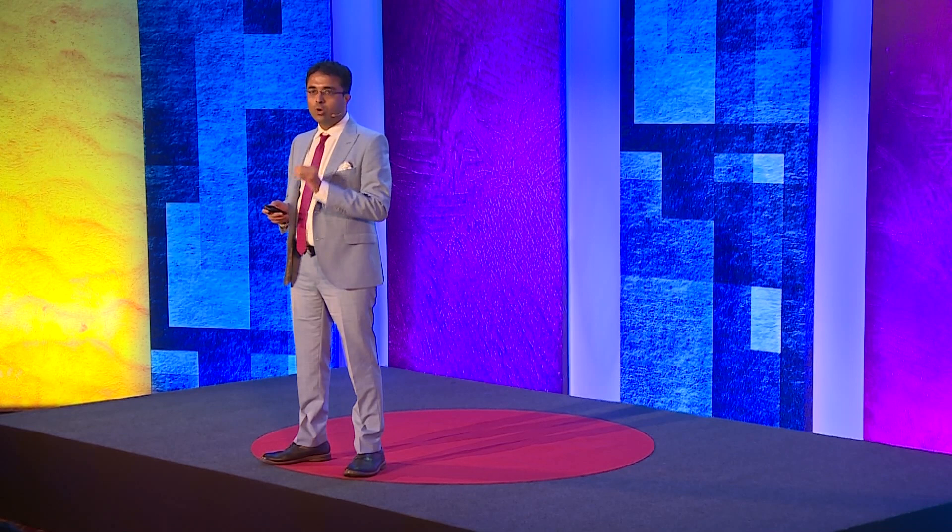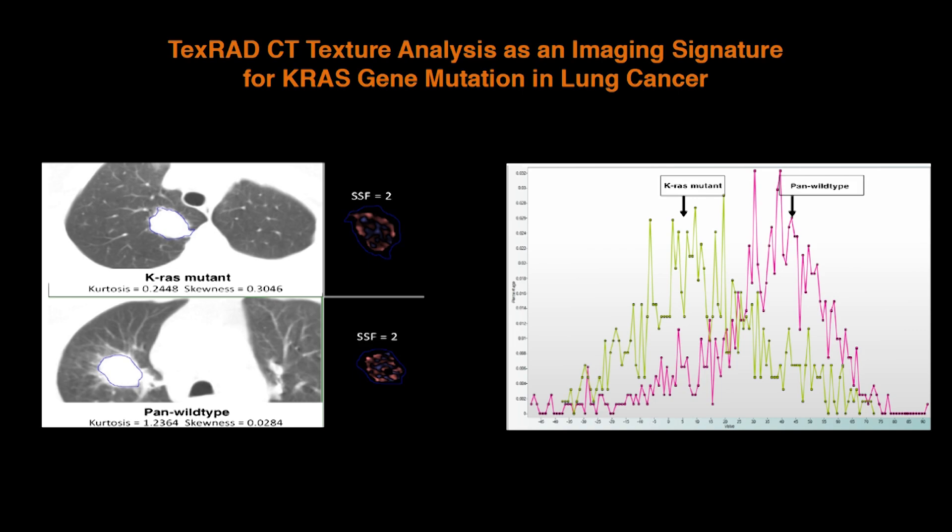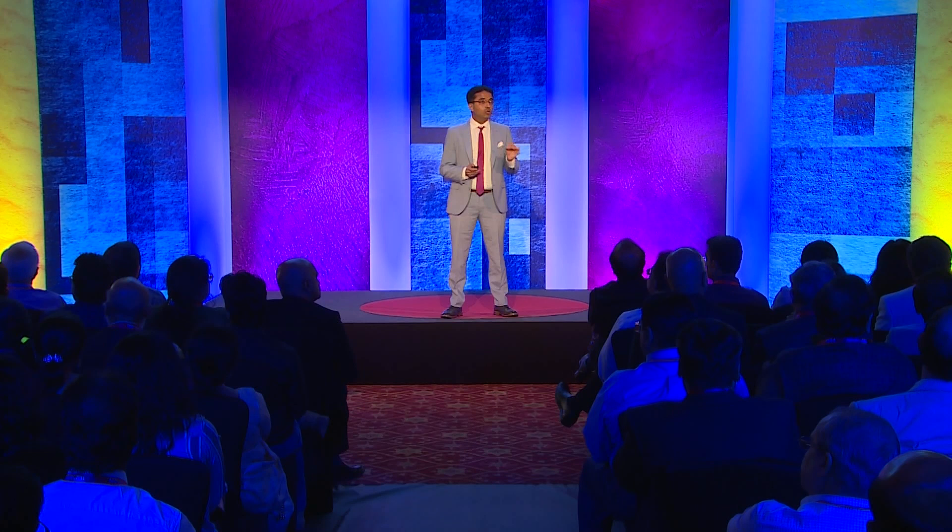There are two lung cancer patients on CT. The tumour appears similar in size and disease stage. However, the texture score is totally different. The top patient is the one with the green histogram, and this patient has a particular abnormal characteristic linked to a specific gene mutation.